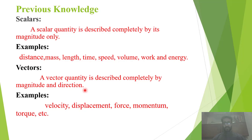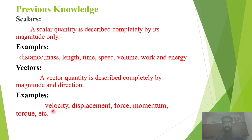ایک vector quantity کو completely describe کرنے کے لیے ہمیں اس کی magnitude کے ساتھ ساتھ اس کی direction بھی پتا ہونی چاہیے۔ مثال کے طور پہ: velocity، displacement، force، momentum، torque وغیرہ۔ یہ تمام quantities ایسی quantities ہیں کہ اگر ہم نے ان کو completely describe کرنا ہے تو ہمیں ان کی magnitude کے ساتھ ساتھ ان کی direction بھی پتا ہونی چاہیے۔